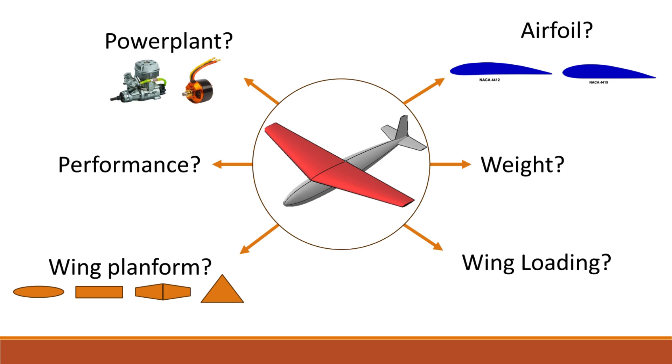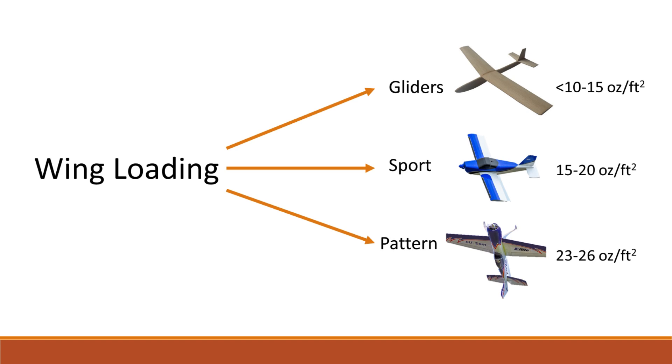Here are typical values of wing loadings. Gliders and sail planes have low wing loadings, sport models are in between, and pattern models have wing loadings on the higher side.